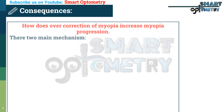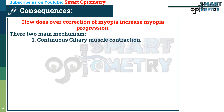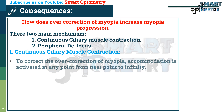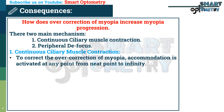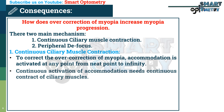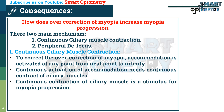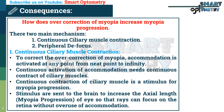There are two main mechanisms of myopia progression when we leave the patient with over-correction of myopia. One: continuous ciliary muscle contraction. Two: peripheral defocus. To correct the over-correction of myopia, accommodation is activated at any point from near point to infinity. Continuous activation of accommodation requires continuous contraction of ciliary muscles, and continuous contraction of ciliary muscles is a stimulus for myopia progression. Stimuli are sent to the brain to increase the axial length of the eye so that rays can focus on the retina without overuse of accommodation.